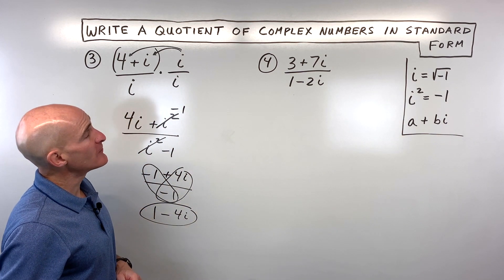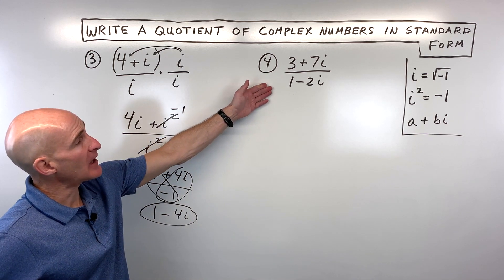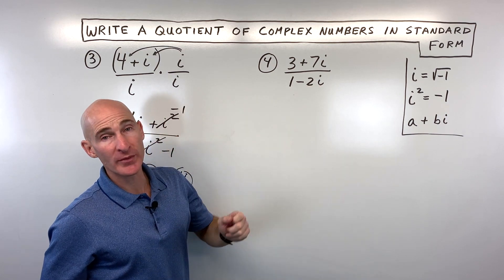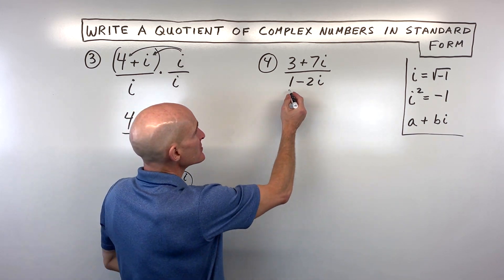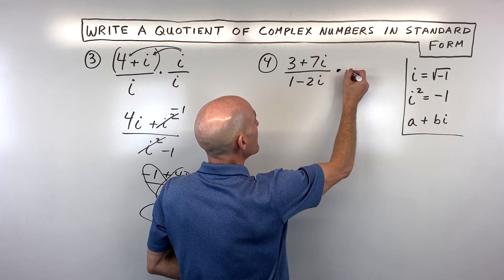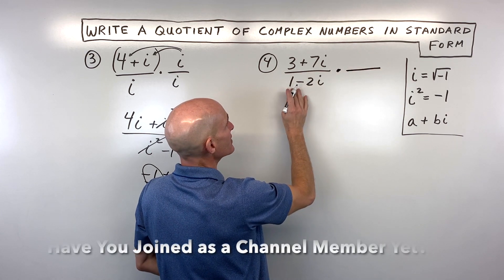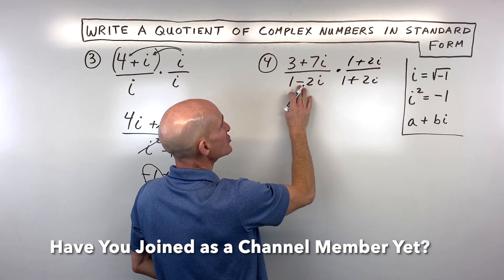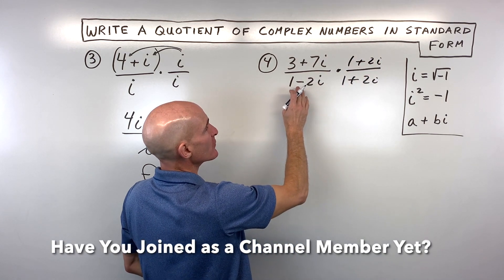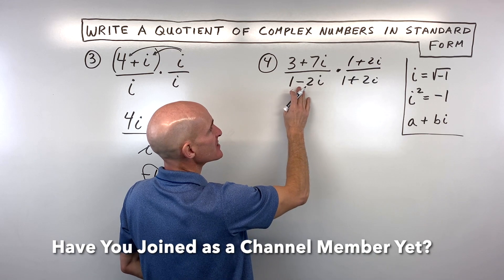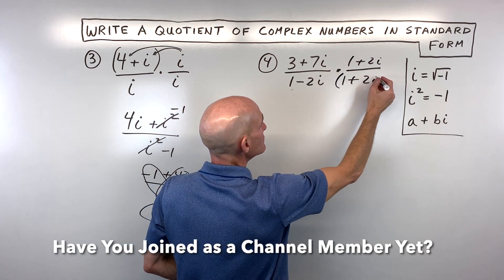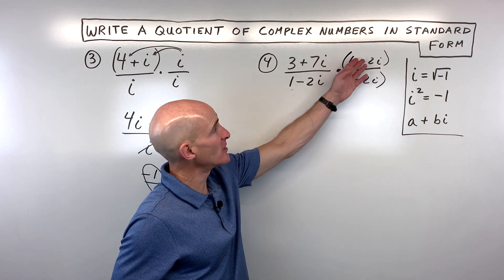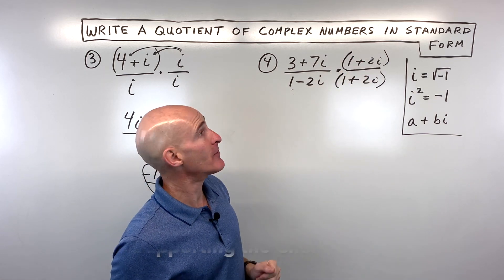For number 4, see if you can try this one. Again, we're trying to get rid of the i in the denominator. Notice we have a binomial — two terms — so because it's a binomial, I'm going to multiply by the complex conjugate, which is going to be 1 plus 2i. You just change the sign in between the two terms: if this was minus, I make it plus. Whatever we multiply the denominator by, we want to multiply the numerator by, because this is really like multiplying by 1.